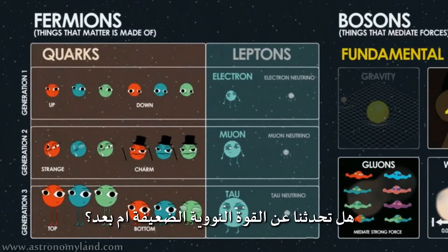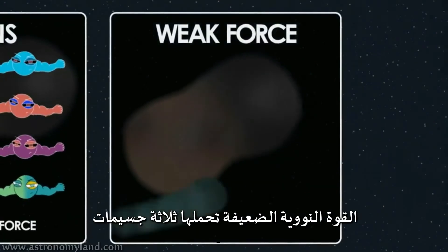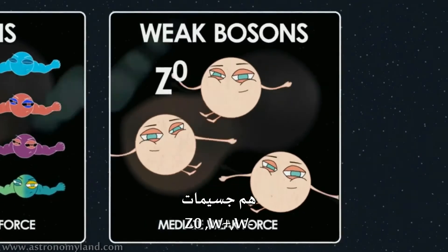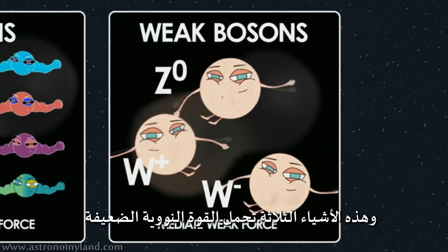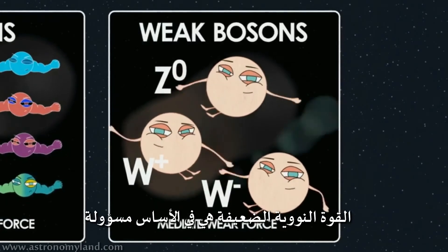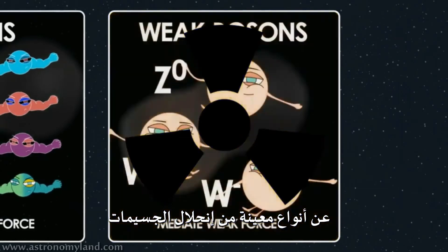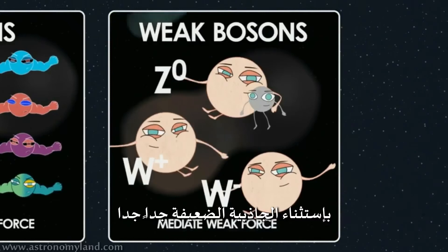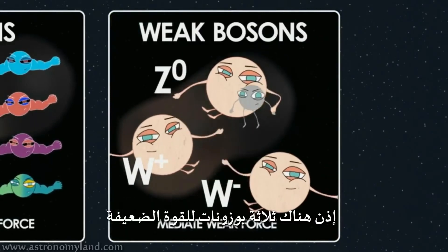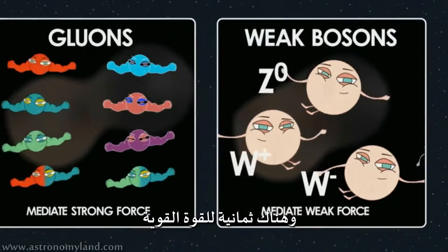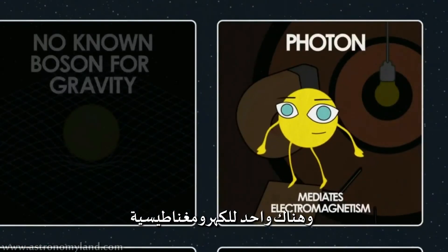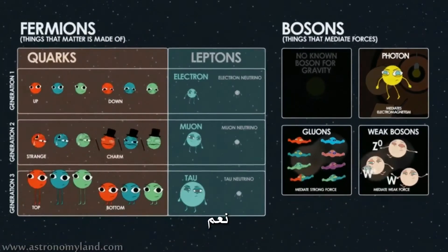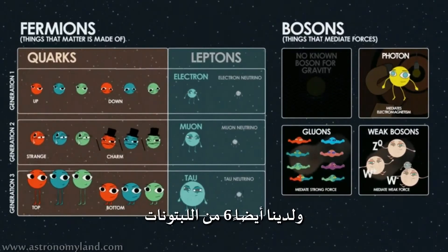We haven't talked about the weak nuclear force yet. The weak nuclear force is carried by three particles: the Z-naught and the W-plus and W-minus. The weak nuclear force is basically responsible for certain kinds of particle decay, and it's also the only thing that neutrinos feel, except for very, very weak gravity. So there are three bosons for the weak force, eight for the strong force, and one for electromagnetism - that's 12 bosons. And then you've got your 18 quarks and the six leptons.